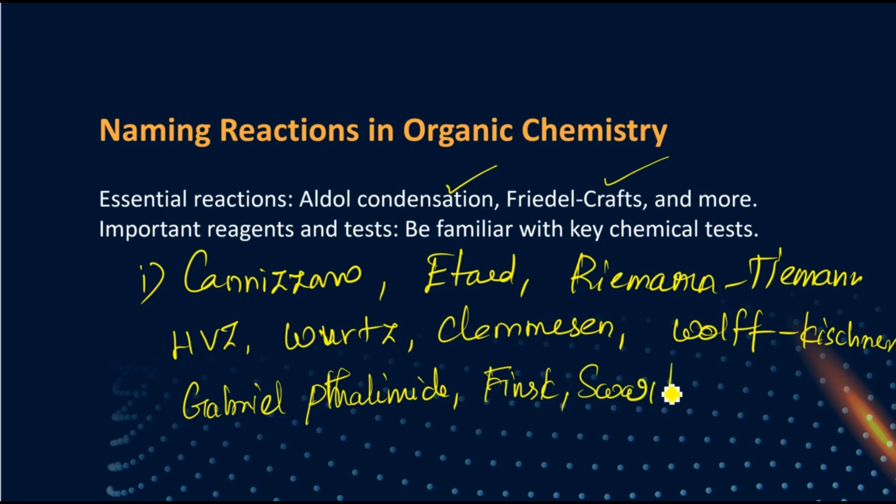Then Finkelstein, Swarts, these are super important. Then Dow's process for the preparation of benzene. Then Cumene process, Birch, Carbylamine reaction. I'm attaching this sheet in the description, please do check it out. If you're not having any time to do that again and again, just have it as a checklist. This reaction I know, this reaction I know, do it in your mind. Gattermann, Sandmeyer, Gattermann-Koch, Hoffmann, Williamson, and Schotten-Baumann.